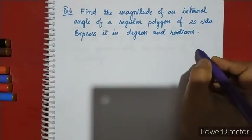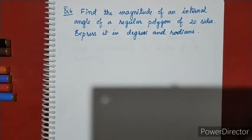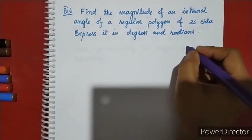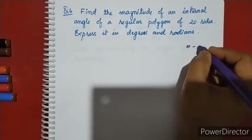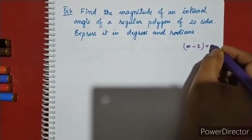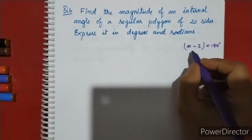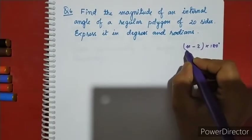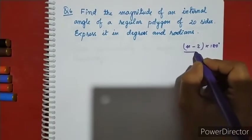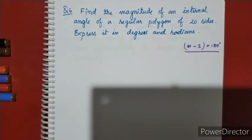For any polygon, the sum of the internal angles equals (n minus 2) into 180, where n is the number of sides.